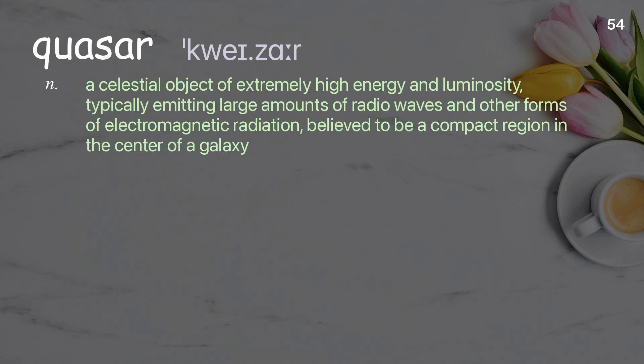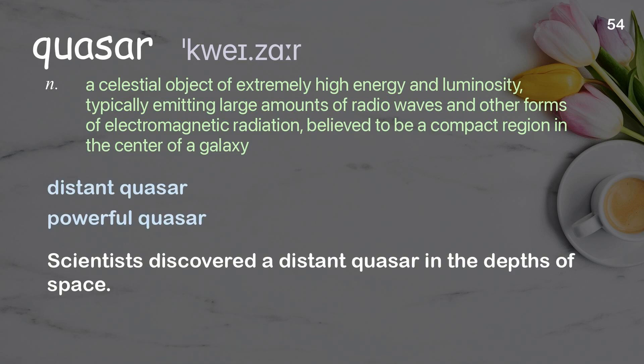Quasar: a celestial object of extremely high energy and luminosity, typically emitting large amounts of radio waves and other forms of electromagnetic radiation; believed to be a compact region in the center of a galaxy. Examples: distant quasar; powerful quasar. Scientists discovered a distant quasar in the depths of space.